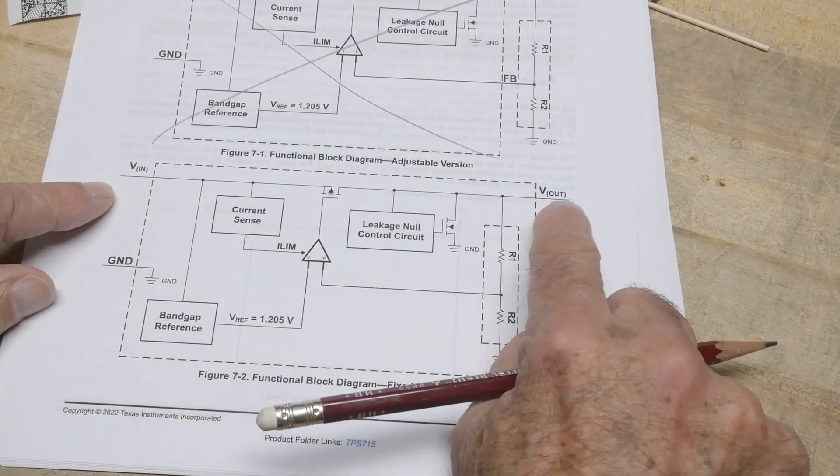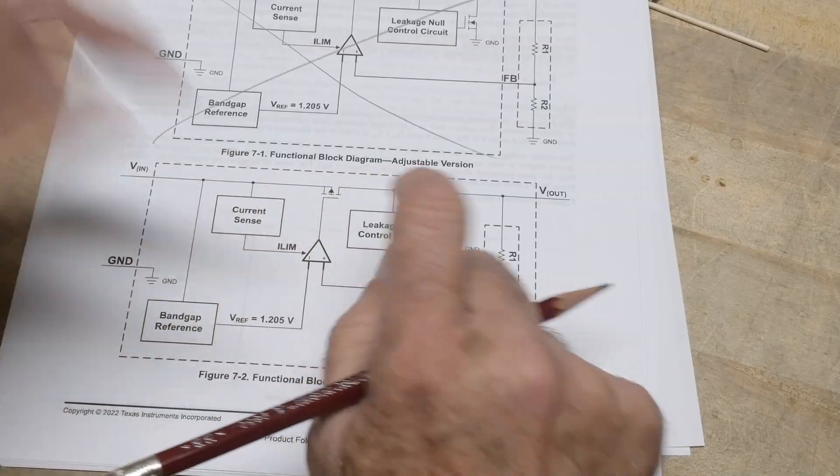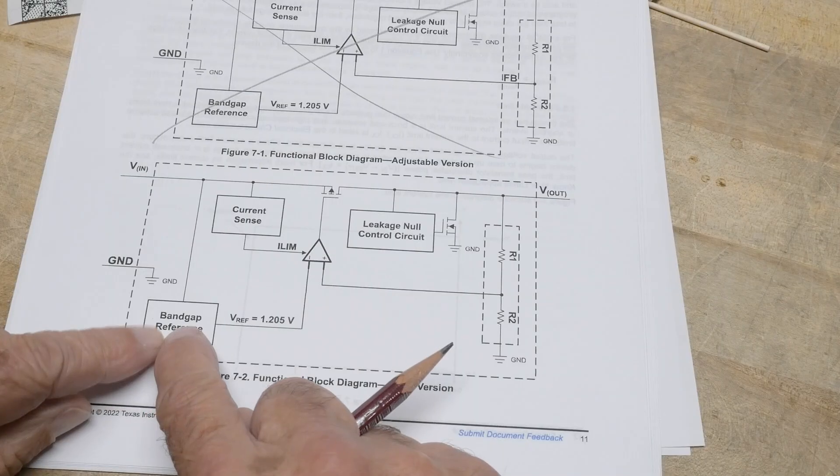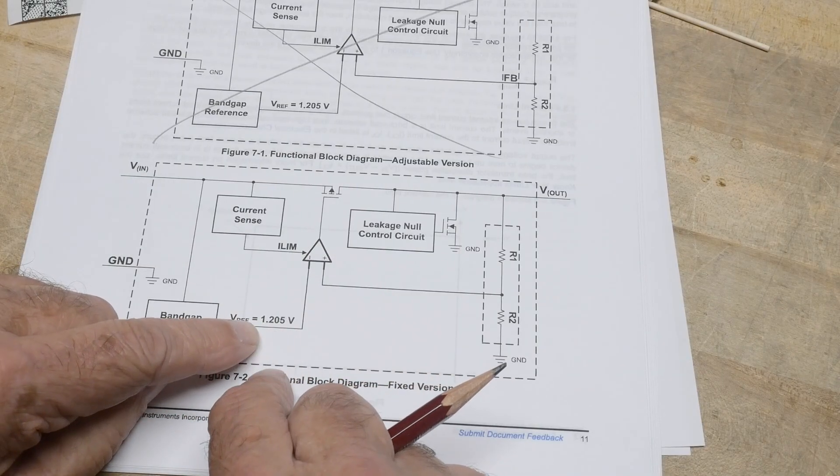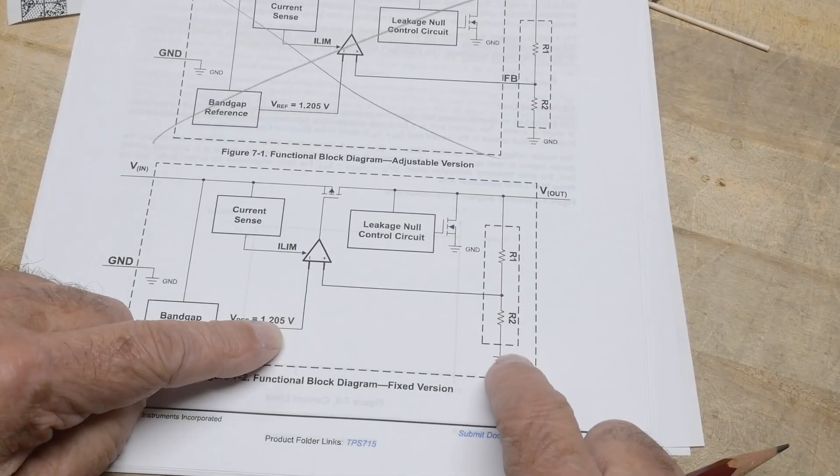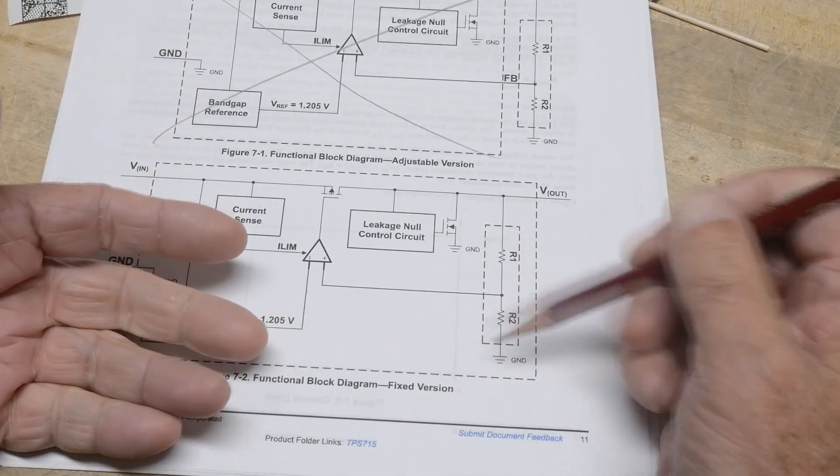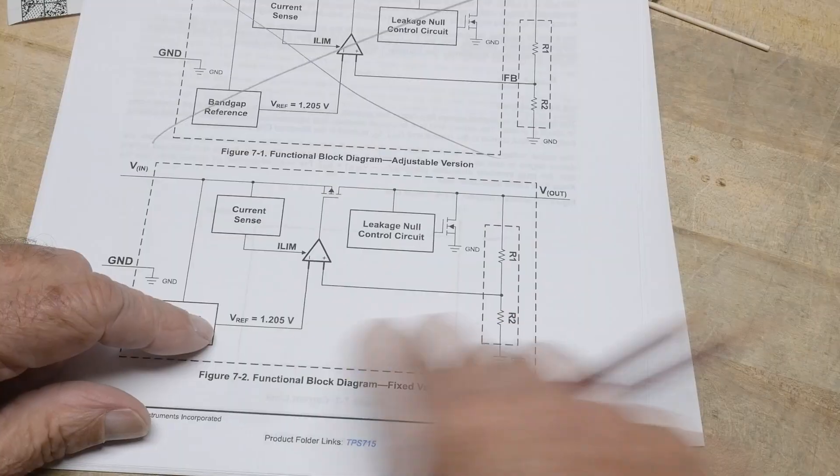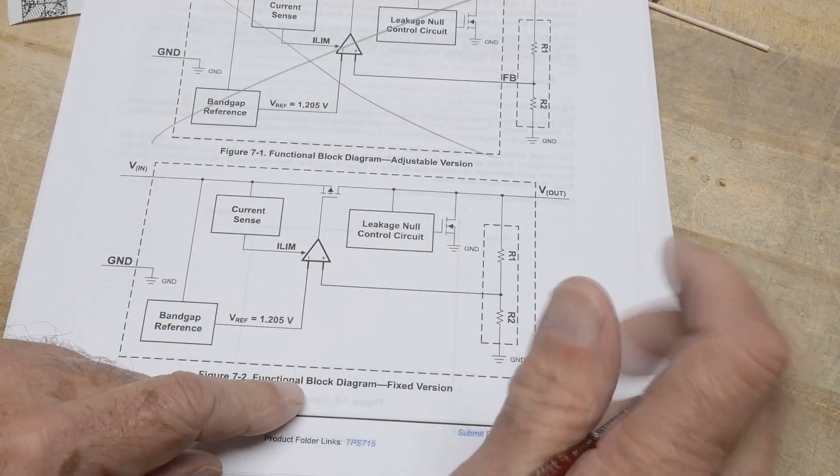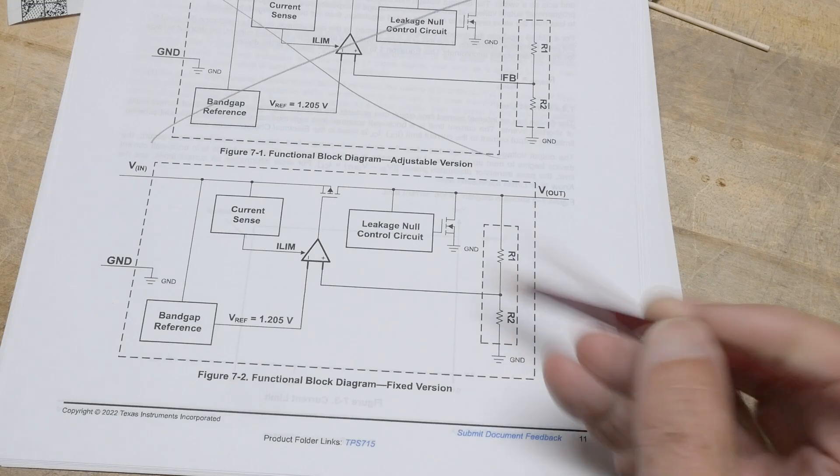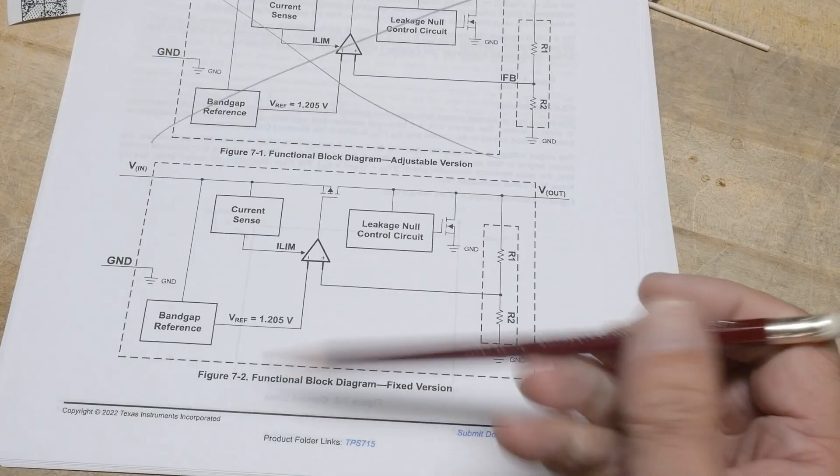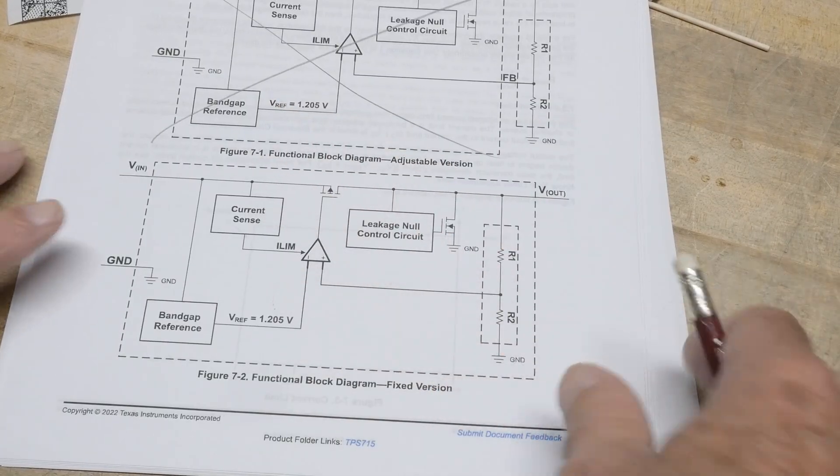So the input goes to the output through a pass FET. And then there's a comparator here that compares an internal band gap reference of 1.205 with the output through a divider. So there's a resistive trimmed resistor in the product that gives you this comparator, whether you're too high or too low. Leakage null control circuit. That's interesting. And then current sense. If you have too much current, that probably shuts down.